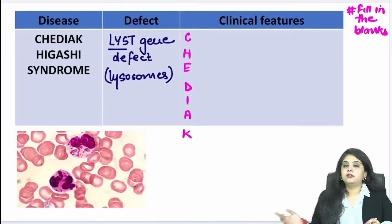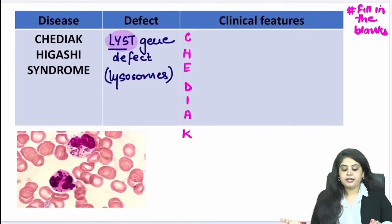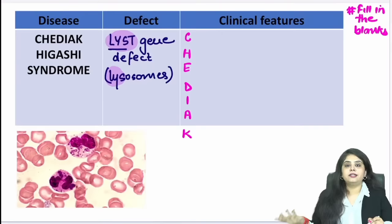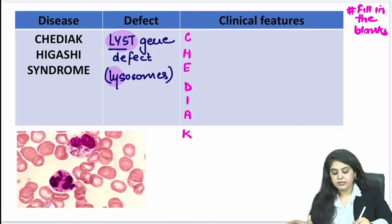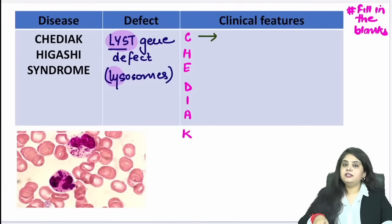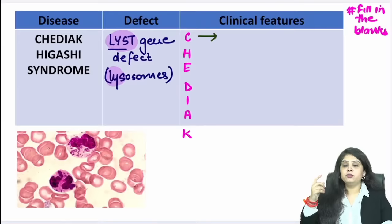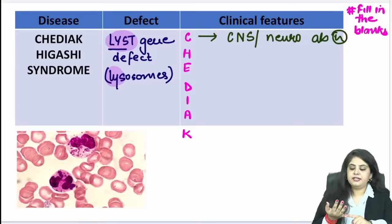Why not Chediak-Higashi syndrome? In Chediak-Higashi, there is one very classical hair and skin problem that must be mentioned. Let us do the fill-in-the-blanks for the Chediak-Higashi table. The genetic mutation is the LYST gene defect. LYST relates to lysosomes — there is a lysosomal problem. Sometimes the examiner writes 'lysosomal defect' instead of 'LYST gene' — it is one and the same thing. Keep your common sense open.